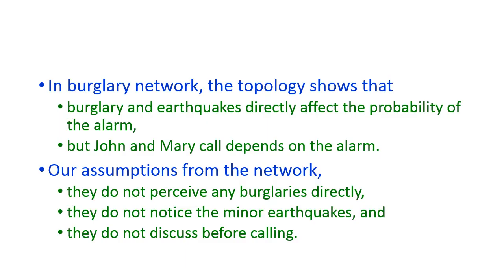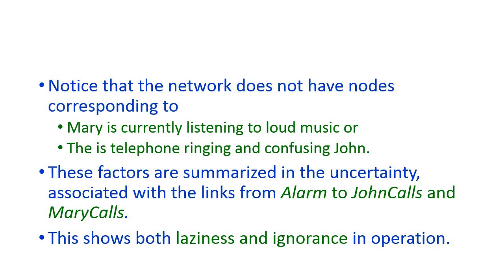In this diagram, alarm directly depends on burglary and earthquake, while John and Mary depend only on the alarm. The letters used are: B = burglary, E = earthquake, A = alarm, J = John calls, M = Mary calls. The topology shows that burglary and earthquake directly affect the probability of alarm, but John and Mary depend on the alarm. Assumptions include: they do not perceive burglaries directly, do not notice minor earthquakes, and do not discuss before calling.